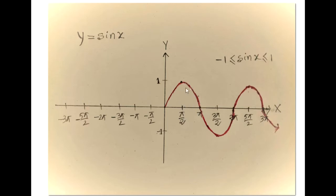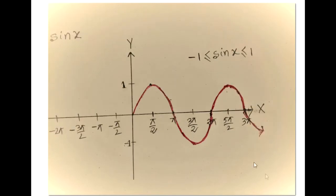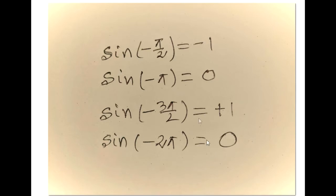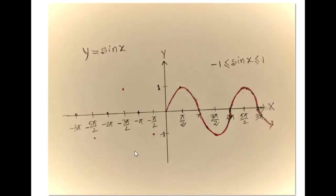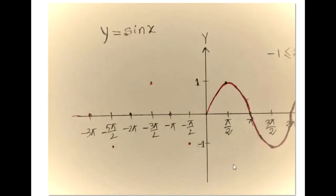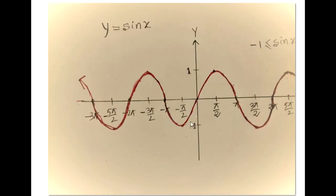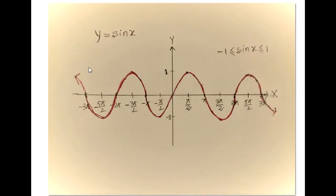So this is like a curve. Similarly, for the left side, we know that sin negative pi over 2 is negative 1, sin negative pi equals 0, sin negative 3pi over 2 is positive 1, and sin negative 2pi is 0. So I indicate those points and add them with this curve. So this is the curve of y equals sin x.